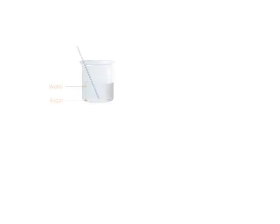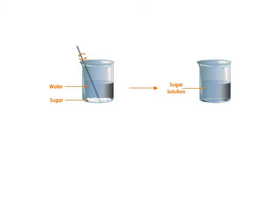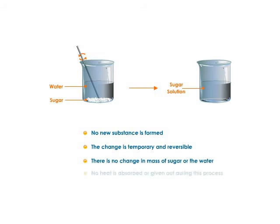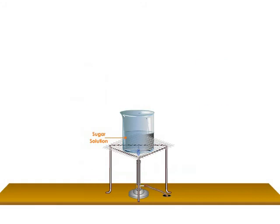A physical change: dissolving sugar in water is a physical change because no new substance is formed, meaning there is no chemical reaction between sugar and water. You get a homogeneous sugar solution. On heating, the sugar solution undergoes evaporation to give back sugar. In this reverse process also, there is no chemical reaction between sugar and water.